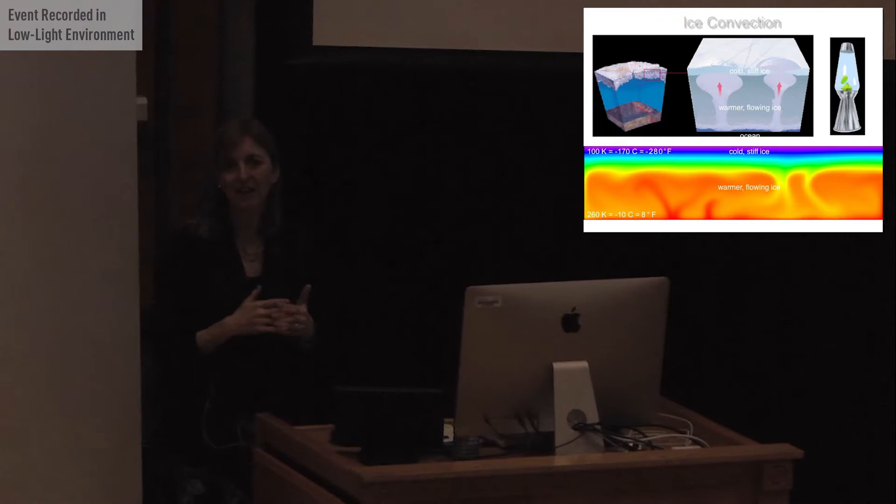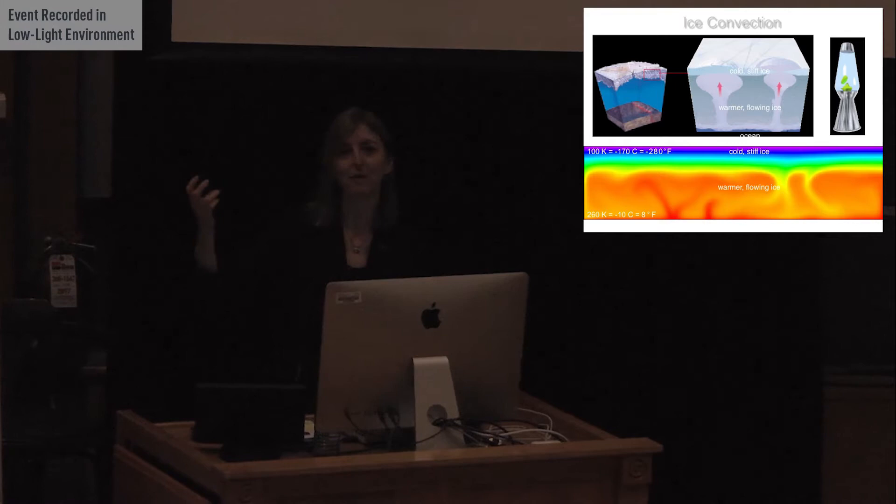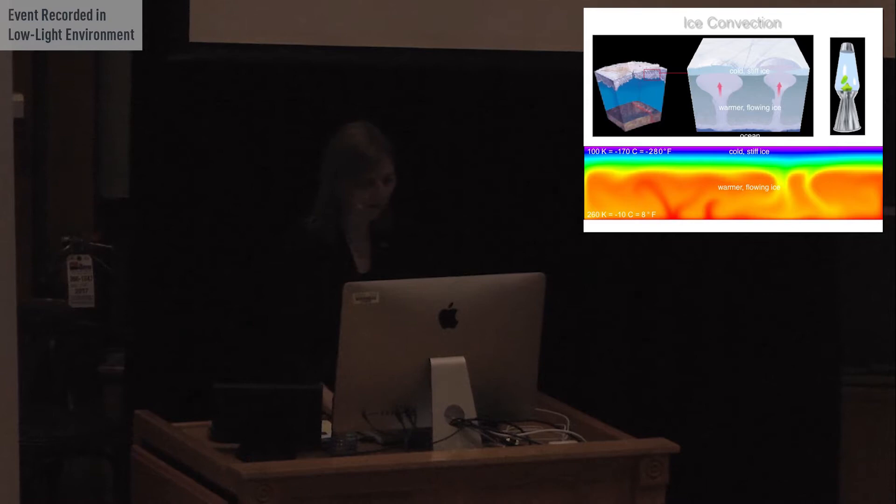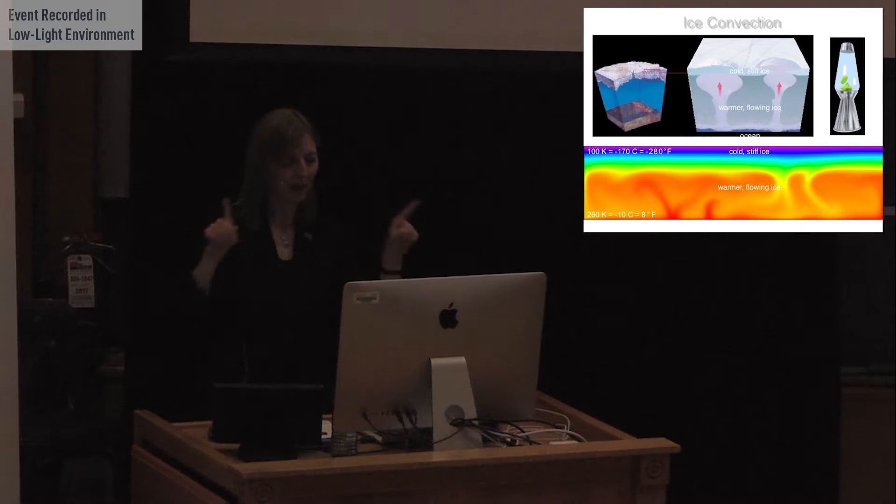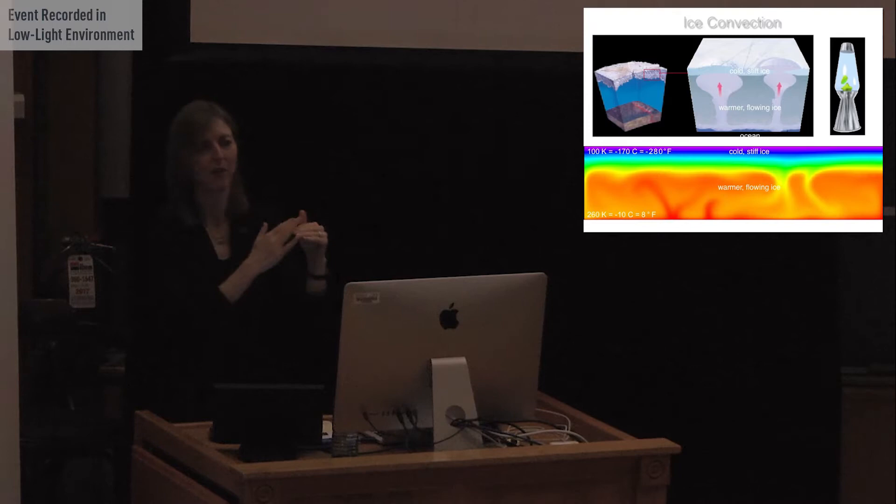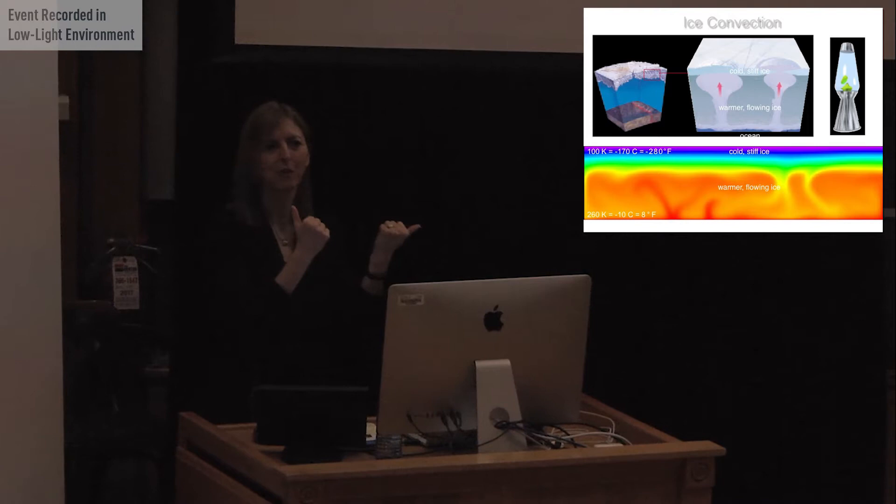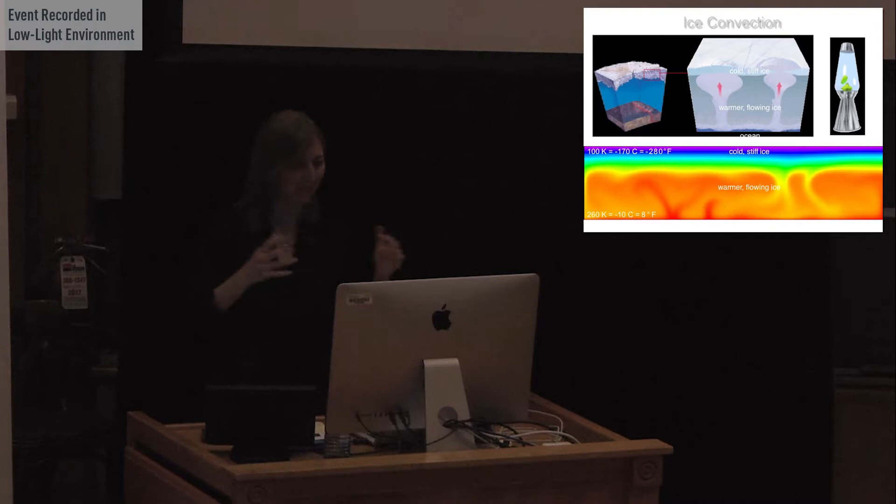We think this happens from ice convection within the shell. The shell is thick enough that convection can take place, just like in a lava lamp. You've got this viscous material that gets heated from below and comes up to the surface. And this is just another model that my colleague Amy Barr made, where you can get this warm, flowing ice within the shell. The question is, how do you break through the top part? The top part is very cold and it's very brittle. And so most of the modelers have trouble breaking through the top part of the shell. And yet the observations show that something is breaking through the shell from underneath. So clearly there is a way to get through here. And it probably is related to those impurities.